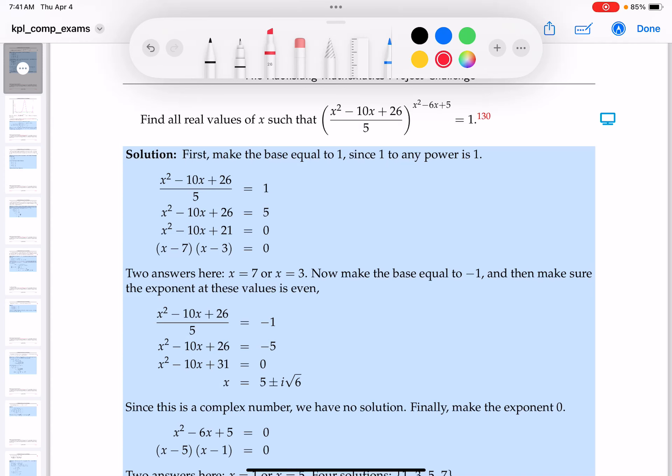For problems like this, I say find all real values of x such that this expression over here would equal the number 1. My first assumption is that lots of people do these problems and they always miss something in the problem. It does happen, by the way. People miss things.